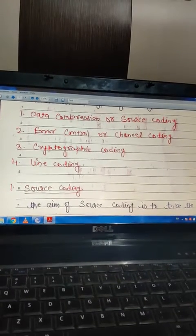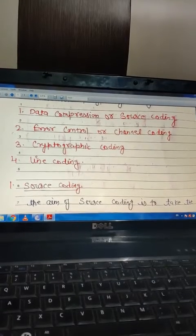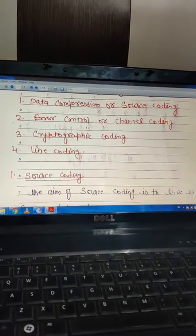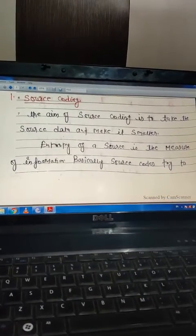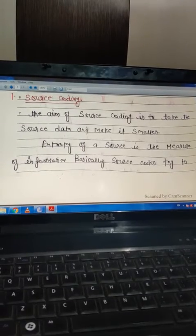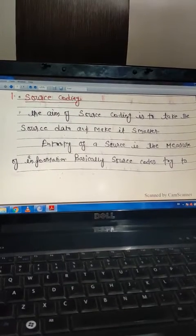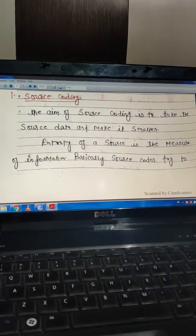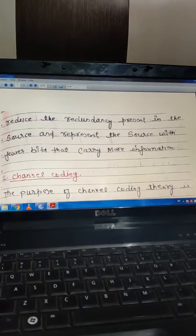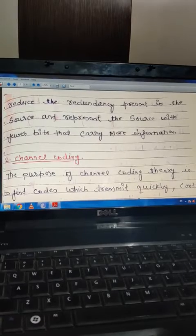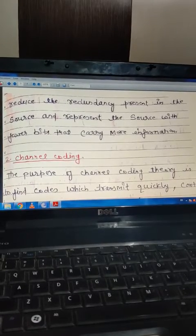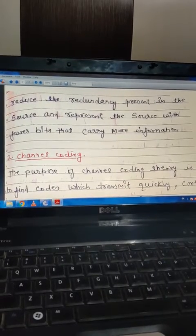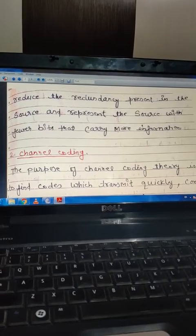Now let's discuss data compression and source coding. The aim of source coding is to take the source data and make it smaller. Entropy of a source is the measure of information. Basically, source codes try to reduce the redundancy present in the source and represent the source with fewer bits that carry more information.